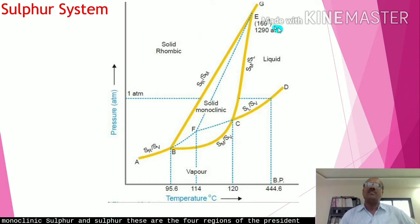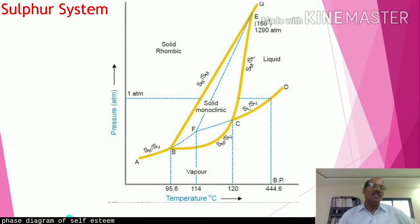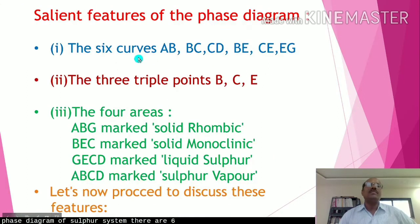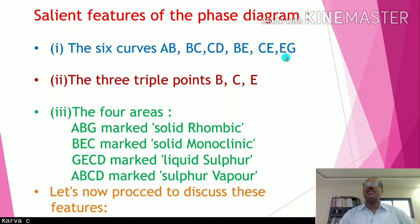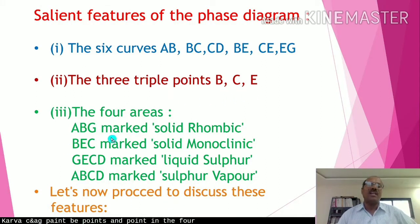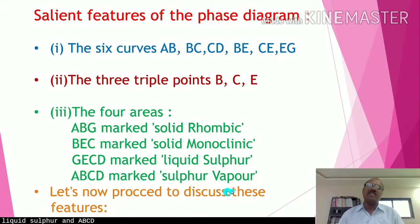The salient features of the phase diagram of the sulfur system are: six curves — AB, BC, CD, BE, CE, and EG; three triple points — B, C, and E; and four areas: ABEG marked as solid rhombic, BEC marked as solid monoclinic, GECD marked as liquid sulfur, and ABCD marked as sulfur vapor.